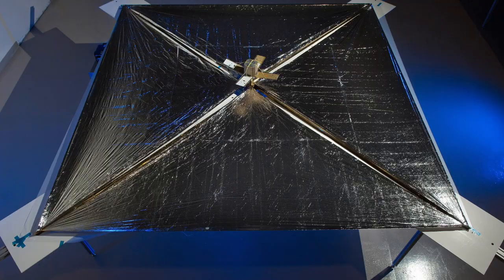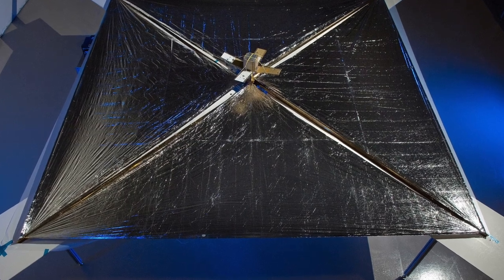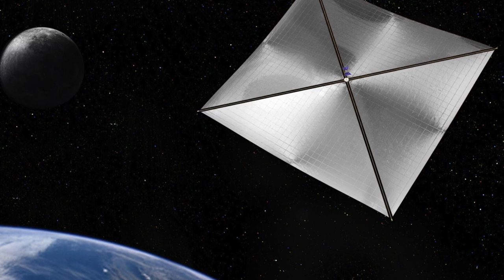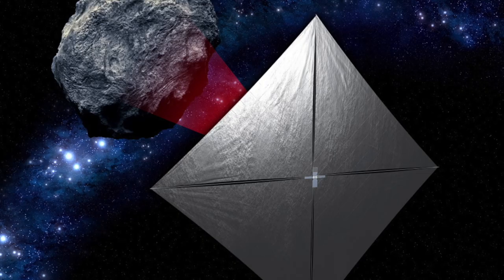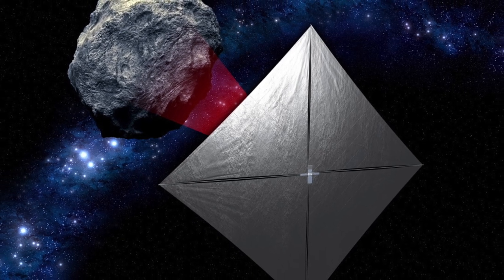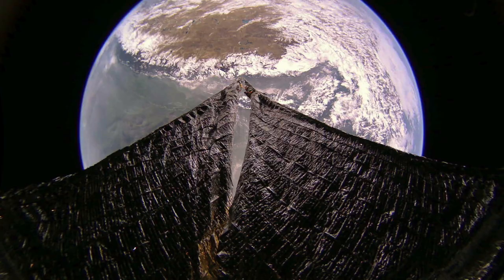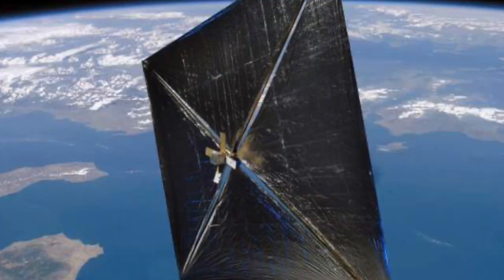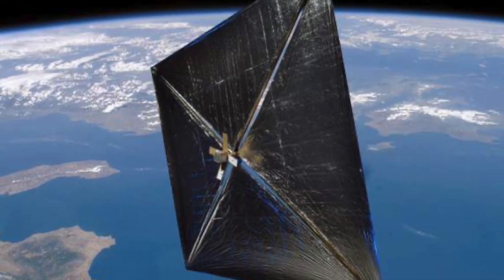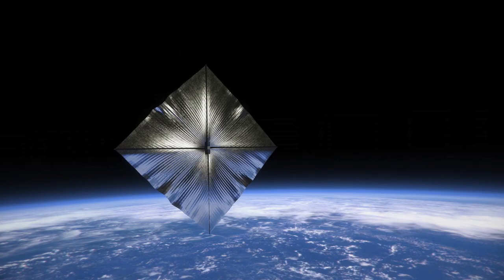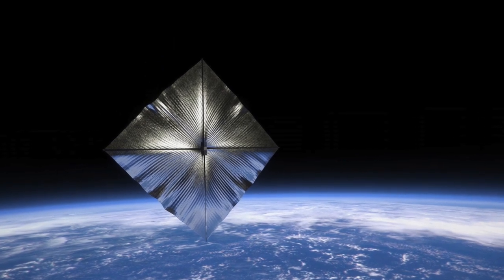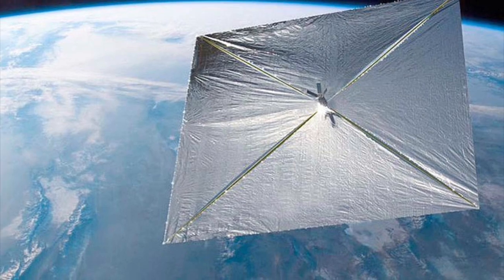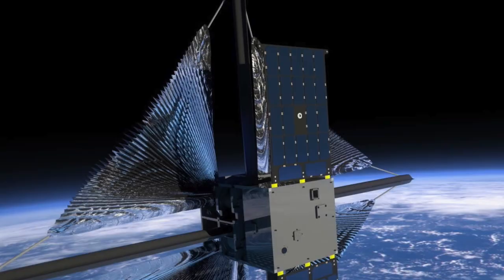Sail parameters include sail loading, aerial density, which affects the craft's acceleration. The characteristic acceleration at one astronomical unit when facing the sun is defined by the sail's aerial density. The lightness number, lambda, represents the ratio of maximum vehicle acceleration to the sun's local gravity and defines possible orbit maneuvers. Different sail designs offer varying levels of performance, with the lattice sail potentially representing the highest achievable efficiency.